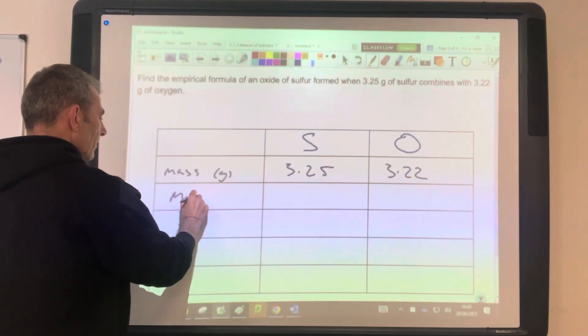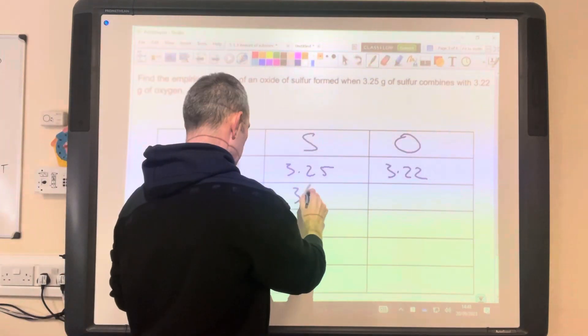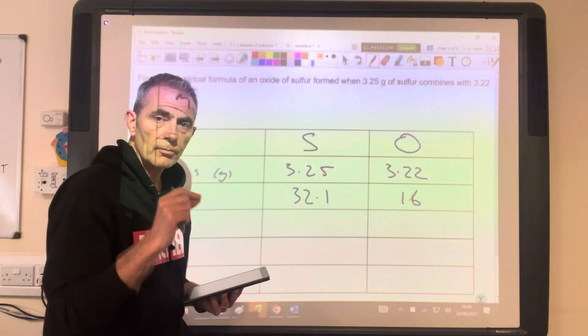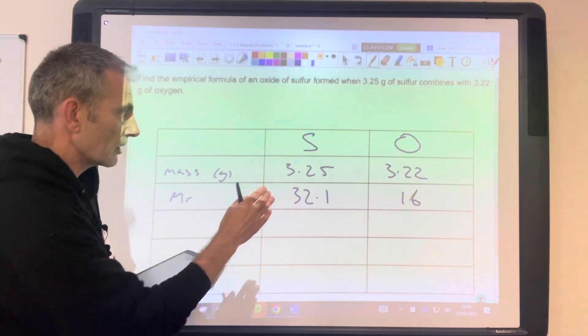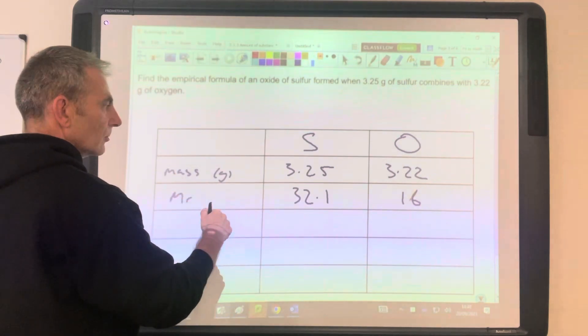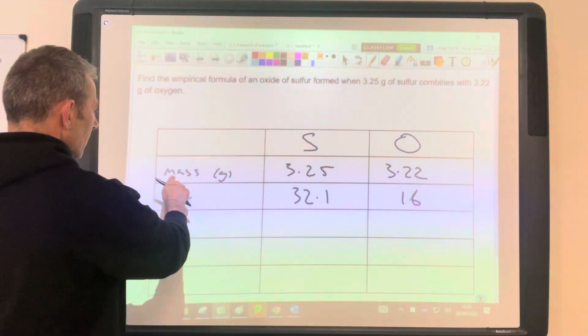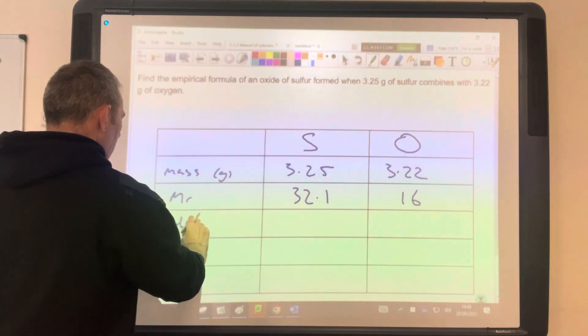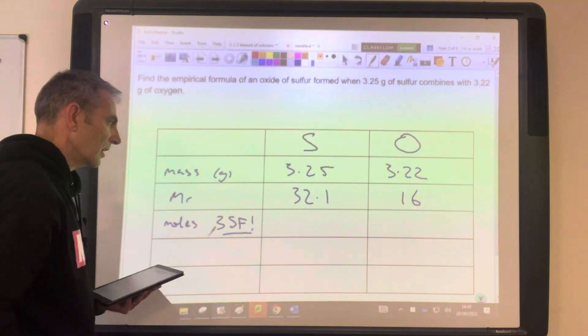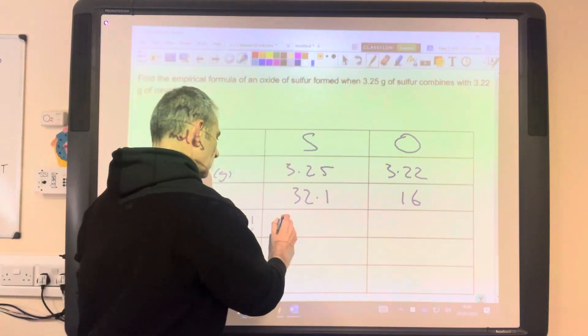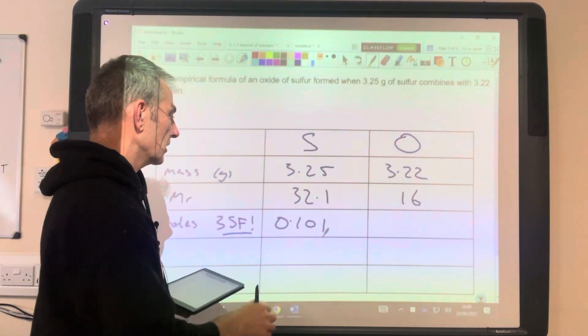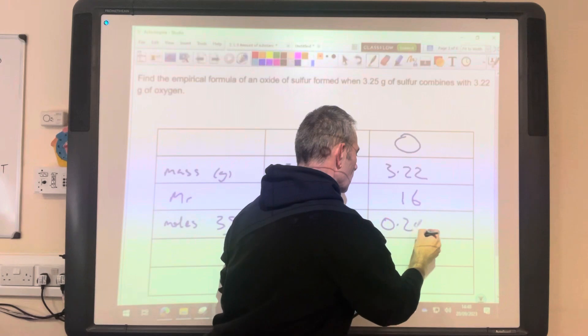We then put the MR of each atom in, so we've got 32.1 for sulfur, 16 for oxygen. Remember, it's atoms, not molecules, so it's 16, not 32. That would be a common mistake. Why do we use those two? It's because we're going to work out the moles. So mass divided by MR gives us the moles. And I always say to my students, a minimum of three significant figures for that. So that comes out at 0.101. So you can't just go 0.1, you'd lose a mark. And this is 0.201.